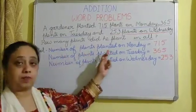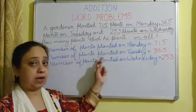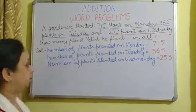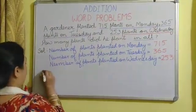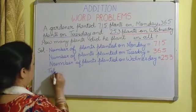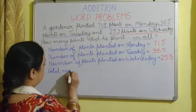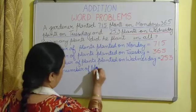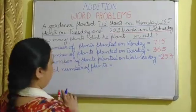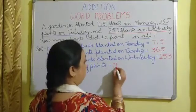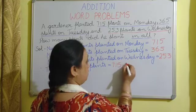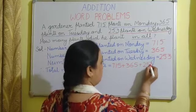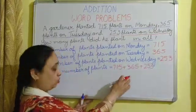We are going to add the number of plants planted on Monday, plus the number of plants planted on Tuesday, plus the number of plants planted on Wednesday. Therefore, total number of plants is — now we are going to add these.